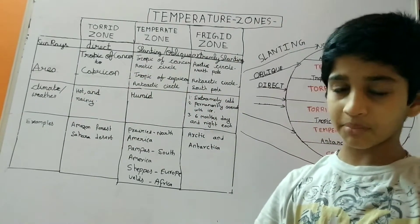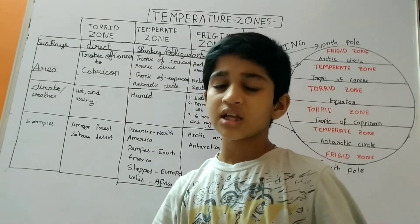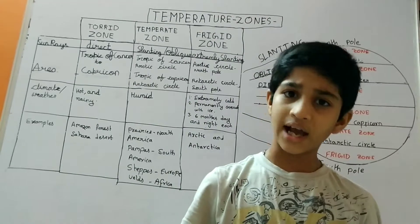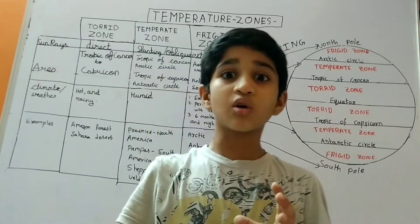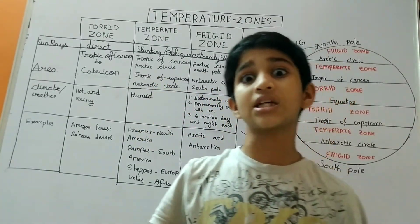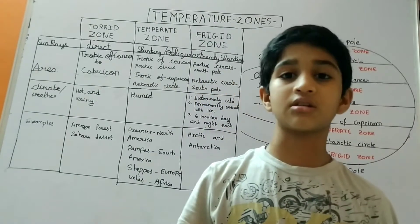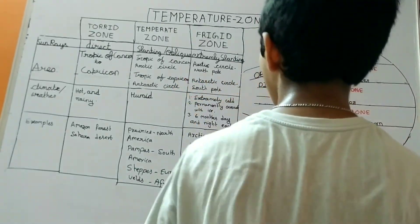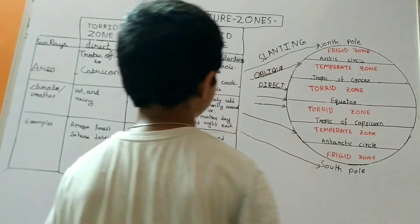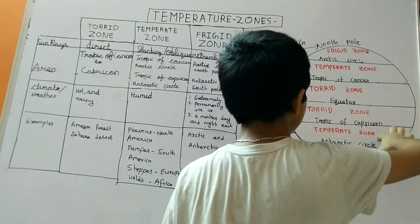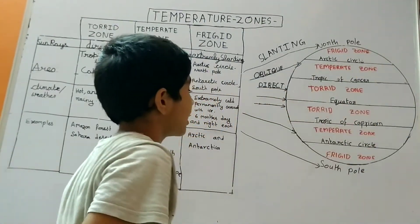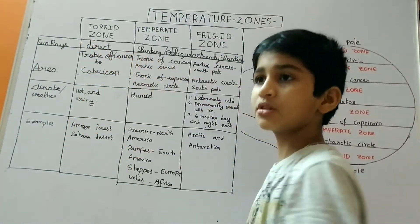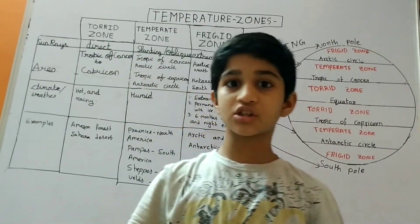What is this temperature zone? Our earth is so vast and in different places we have different temperatures and climate or weather. This is our earth and these are the imaginary lines, and it is divided into three groups — three temperature zones.